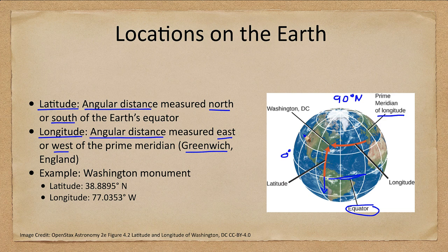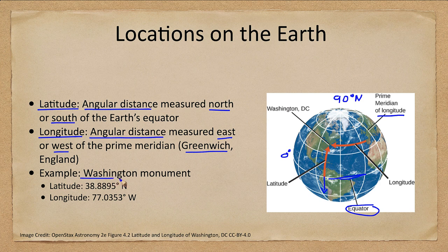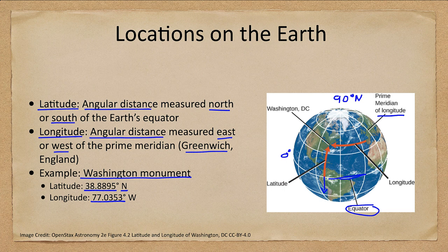When the prime meridian was established, England was the great naval power with a lot of sailing, so it was selected as the standard reference point. Otherwise, if everyone used their own major city — Paris for France or Madrid for Spain — everyone would have different coordinates. So we had to agree on one. With latitude, there's no such issue because the equator has a clear physical definition. For example, the Washington Monument in Washington D.C. is located at a latitude of 38.8895 degrees north and a longitude of 77.0353 degrees west.